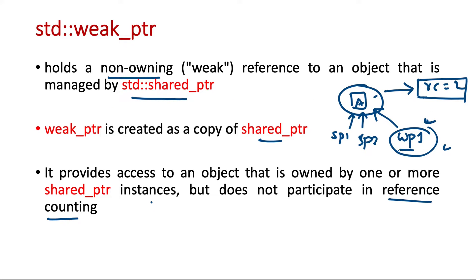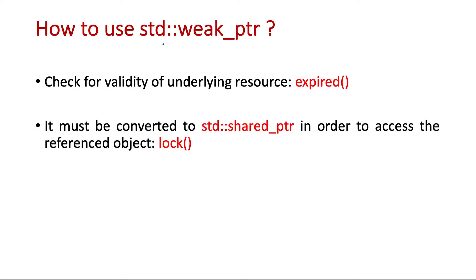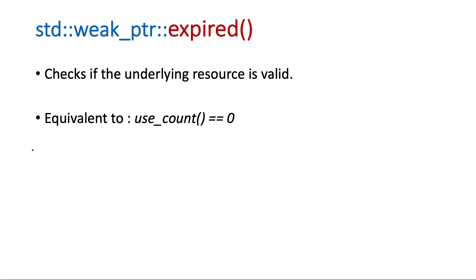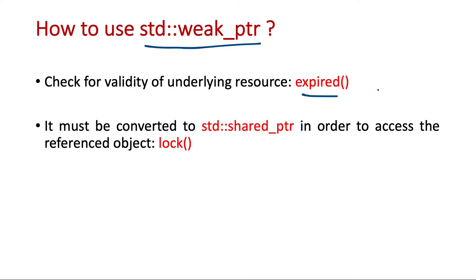To use a weak pointer in our code, we first need to check the validity of the underlying object using the expired() function. The expired() function is equivalent to checking the use count — which returns the reference count of the underlying object. It checks whether the reference count is zero or not. It's a boolean function that returns true or false depending on whether the underlying object is valid.